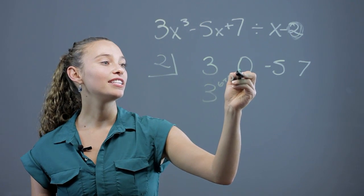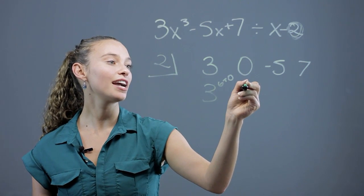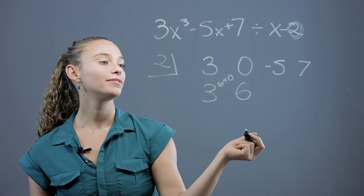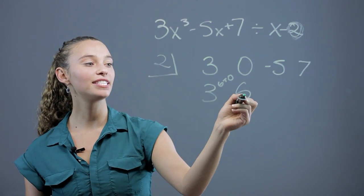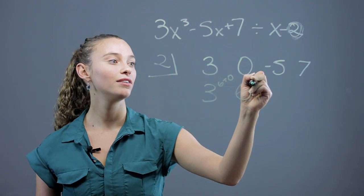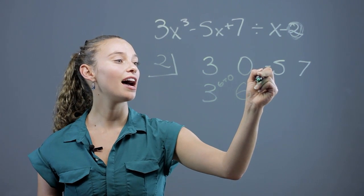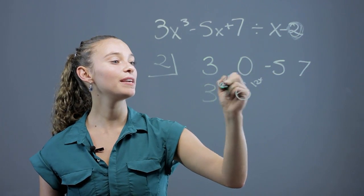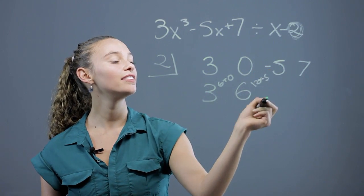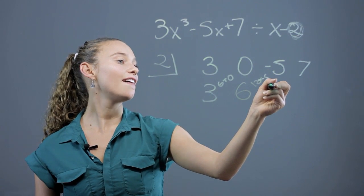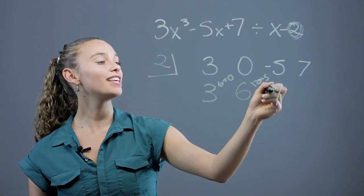You get 6 plus 0 is 6, so the next number is 6. Then, we do the same thing. 2 times 6 is 12. We multiply that, and we multiply the 2 and the 6, and then we add it to the negative 5 to get 7. 12 minus 5 is 7.